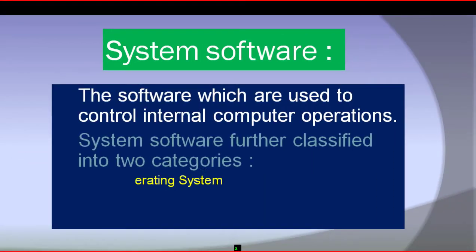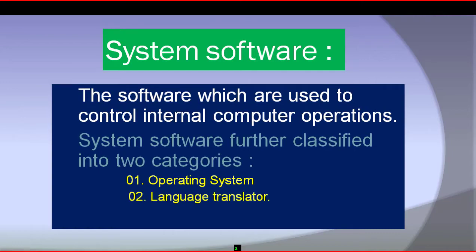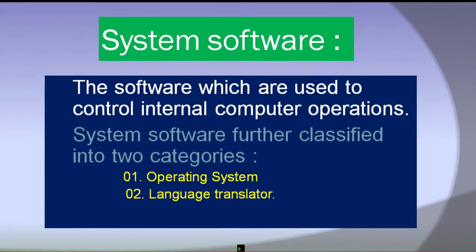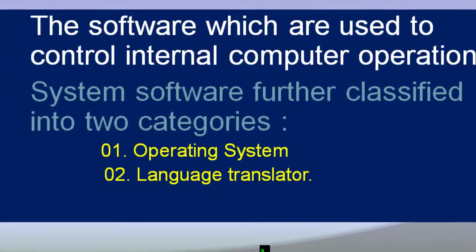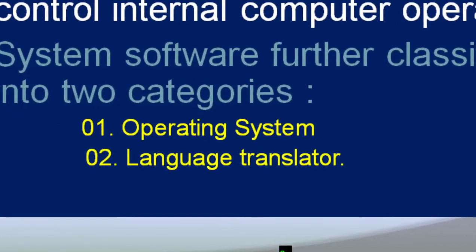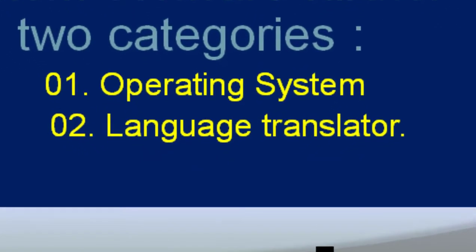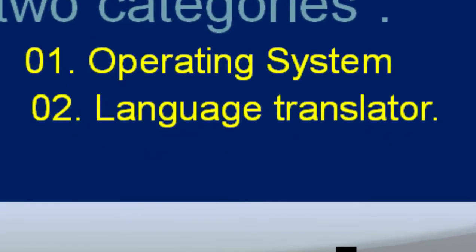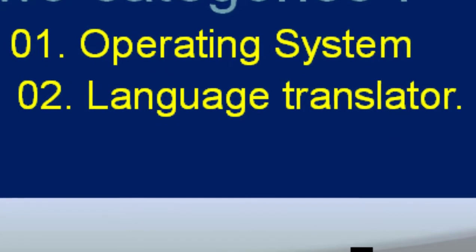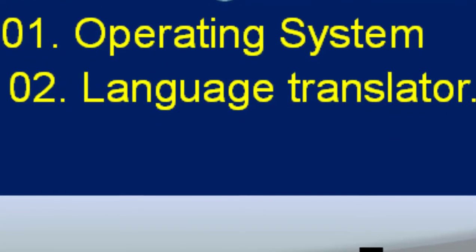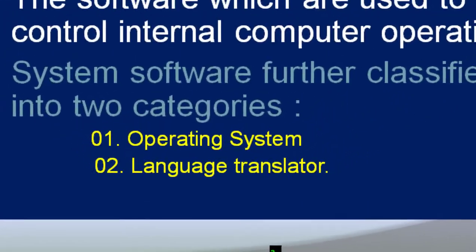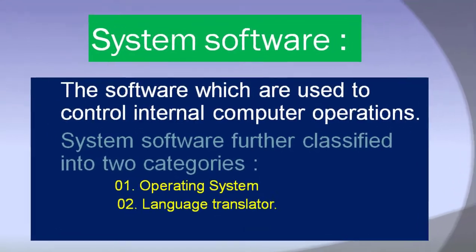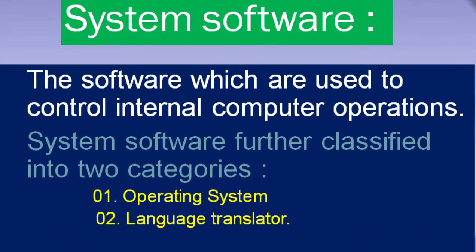The system software is used to control internal computer operations. It includes the operating system and language translator. The operating system is used to control the system software.